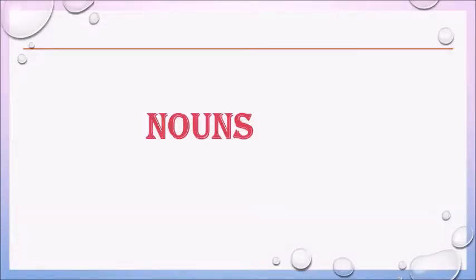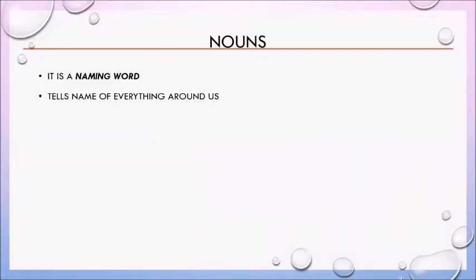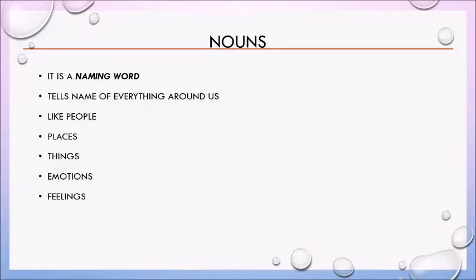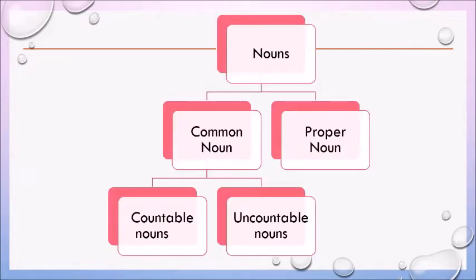Now, you must have been studying about nouns since Class 1 and you should know what it is. A noun is a naming word. It tells the names of everything around us — like people, places, things, emotions and feelings. Nouns simply help us in knowing the names of all the things that we see, feel, or find around us in the world. Nouns have different kinds and today we will talk about them.